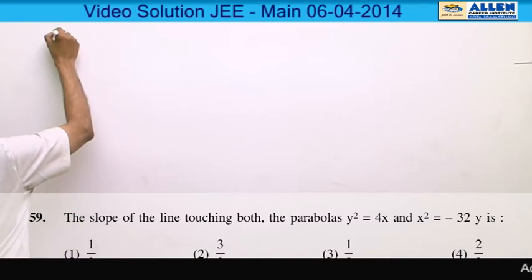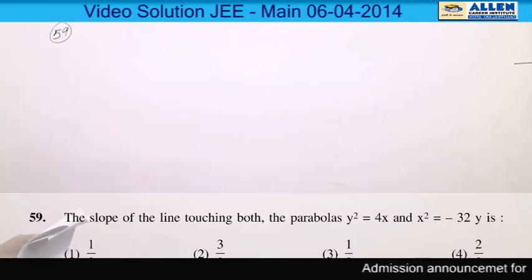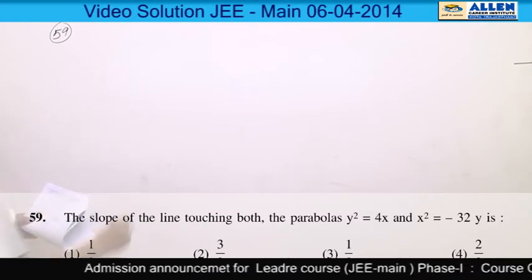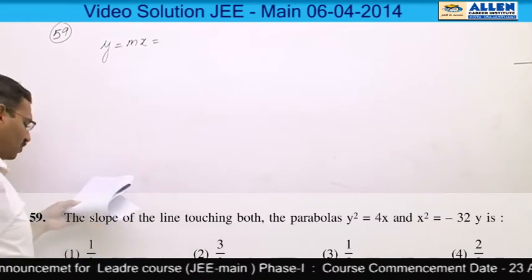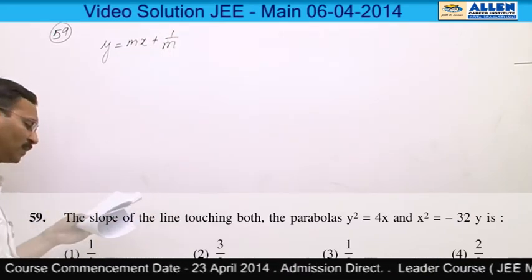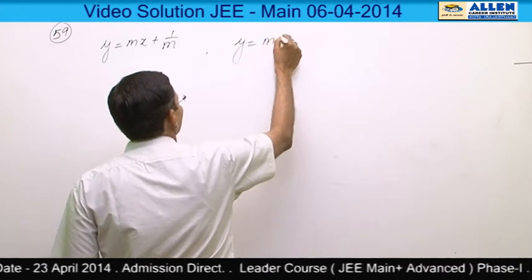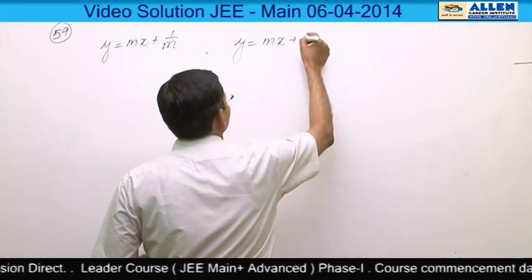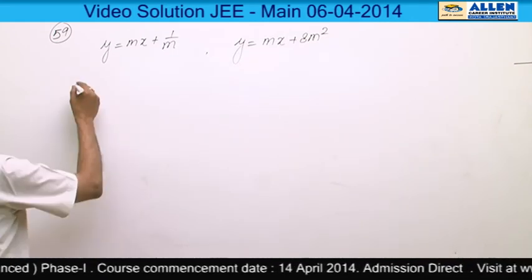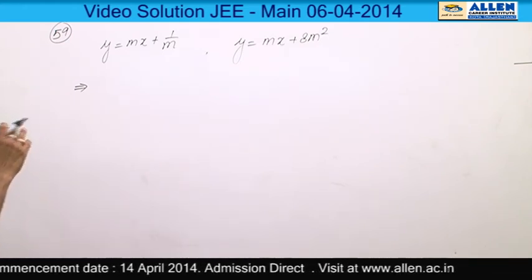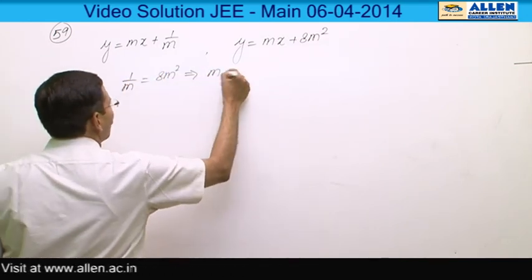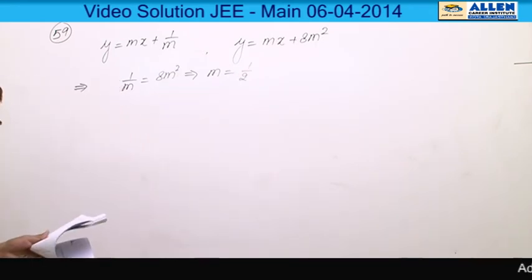Question number 59. Let the slope of the common tangent be m. For the first curve (a = 1), the tangent is y = mx + 1/m. For the second curve (b = −8), it is y = mx + 8m². Since both represent the same line, equating constants: 1/m = 8m², which gives m = 1/2. The correct option is 1.